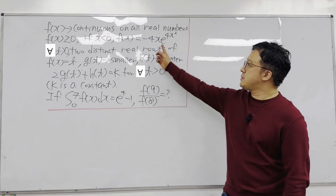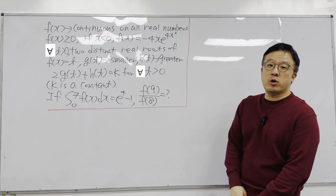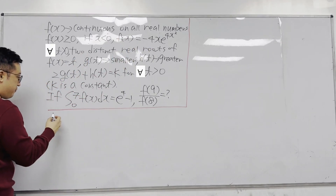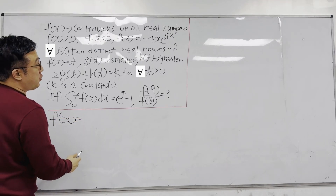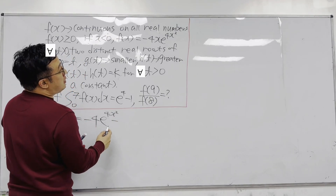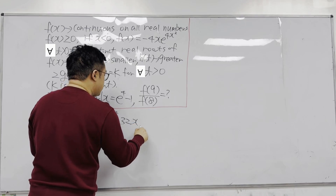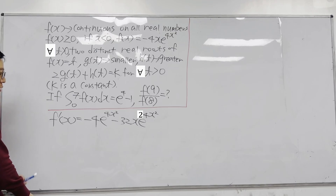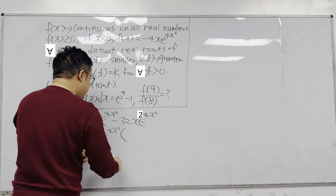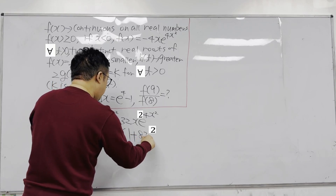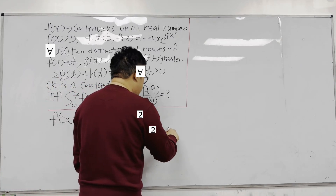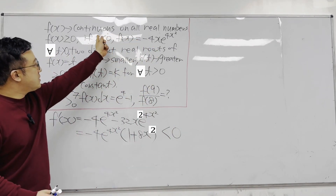First, we can think about the graph of f(x). When x is less than 0, f(x) equals negative x times e to the power of 4x squared, which is a decreasing function. Taking the derivative using the product rule gives f'(x) = negative 4 times e to the power of 4x squared, minus 32x times e to the power of 4x squared. Factoring out negative 4 e to the 4x squared gives us the factor (1 + 8x). Since e to the 4x squared is positive and (1 + 8x) is positive for x near 0 from the left, the negative 4 factor makes f'(x) negative, confirming f(x) is decreasing when x is less than 0.